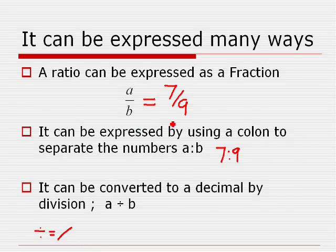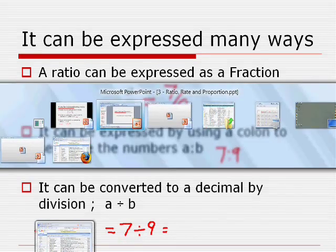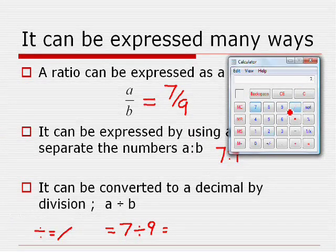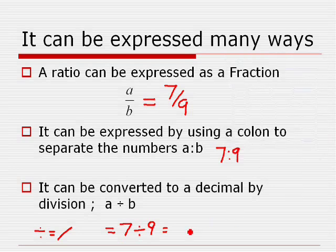So seven over nine also means seven divided by nine. And if we go seven divided by nine, I'll switch to my calculator. Notice even on the computer calculator, it uses that symbol. And it's 0.777 repeating.